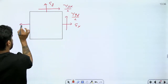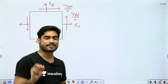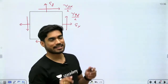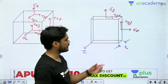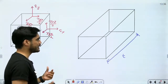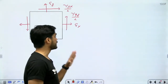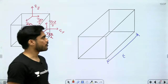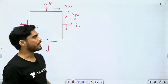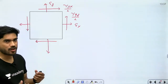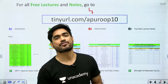So you can understand that plane stress condition and plane strain condition are exactly opposite to each other. In plane stress condition, the thickness is negligible, whereas in plane strain condition, the thickness is very very large. This is the key difference between plane stress and plane strain condition. If you want to understand them in detail, solve numericals, and learn exactly where these conditions are applied, then you need to watch the lectures on strength of materials.